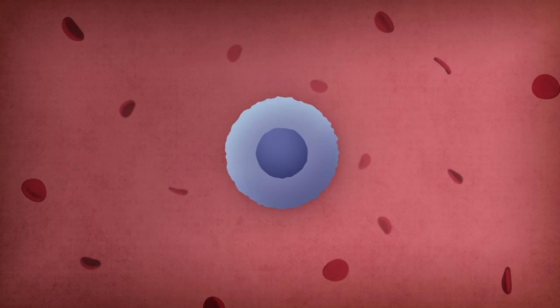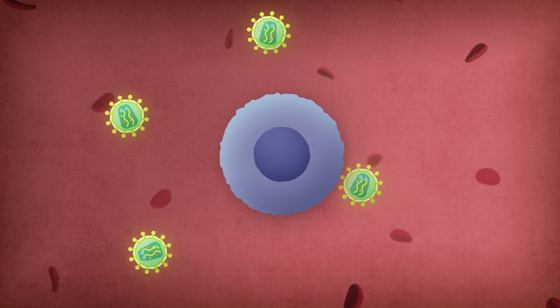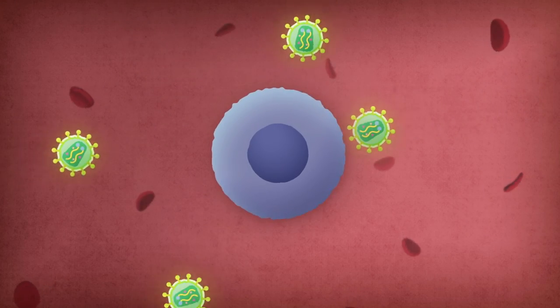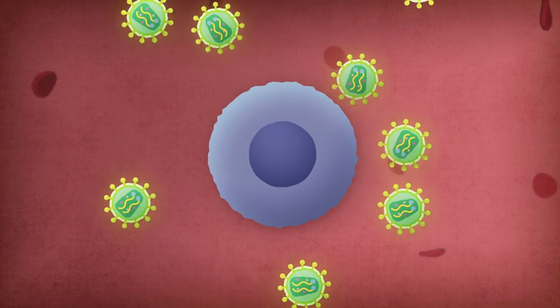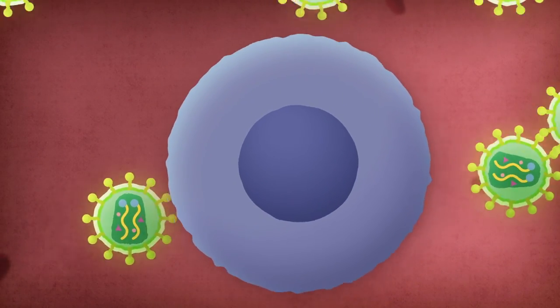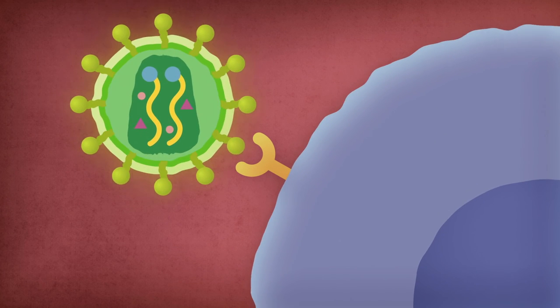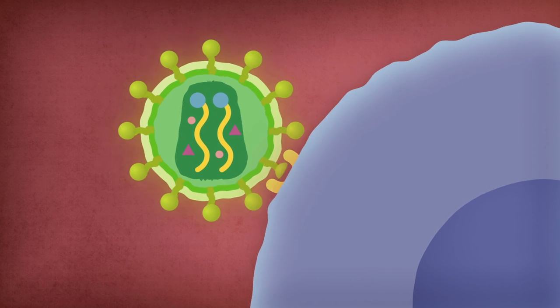The virus attacks CD4 receptor cells in the immune system. Their role is to launch a counterattack when the body is invaded. Like any other virus, the AIDS virus has to penetrate a cell to replicate. The receptors on its surface enable it to merge with CD4 cells, immune cells.